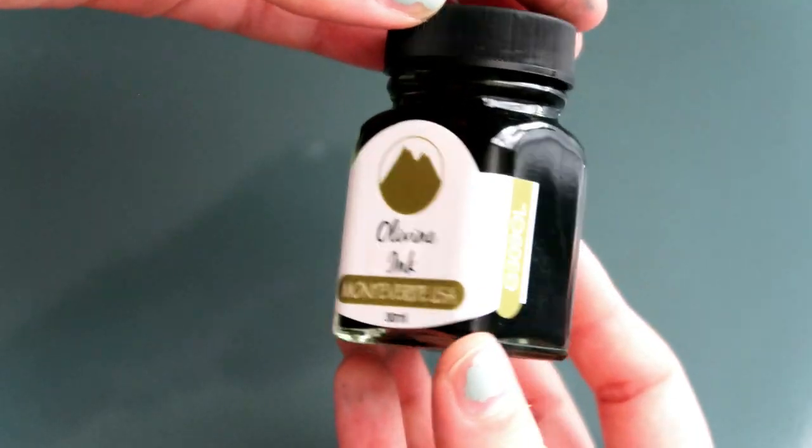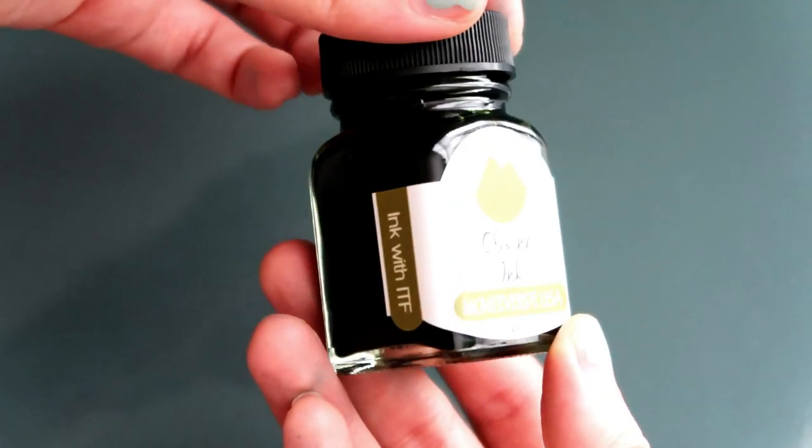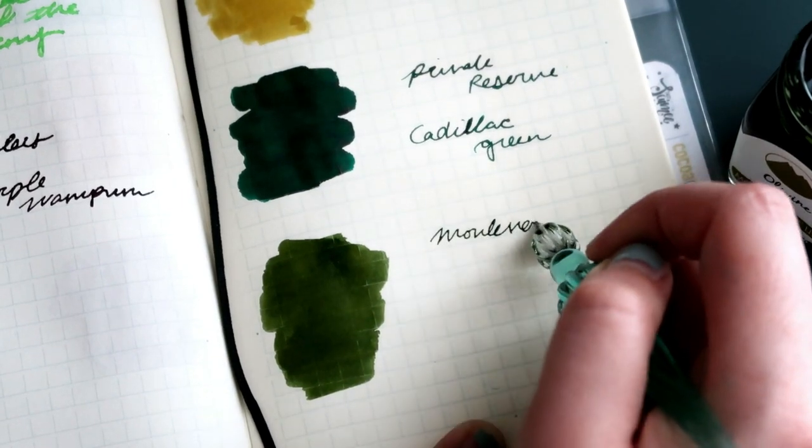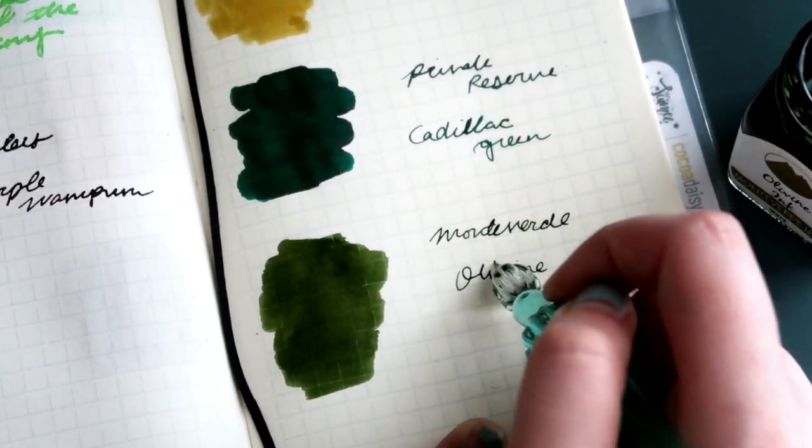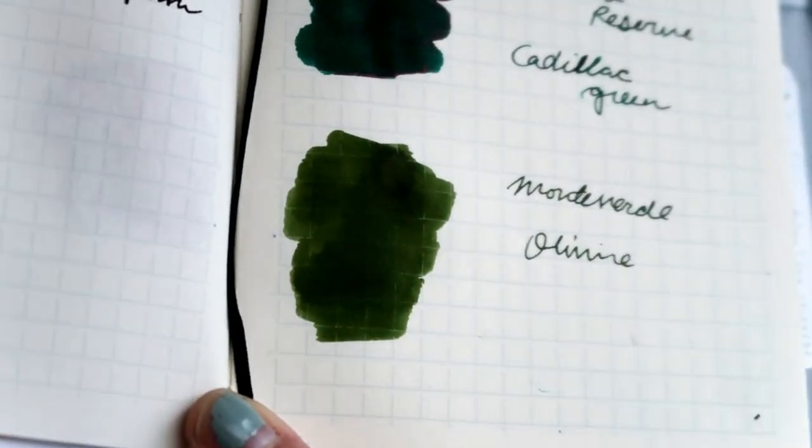Next is the free bottle of ink I received on Fountain Pen Day. This one is Monteverde Olivine. I like the shade, but I did have it in my Eco pen, and it would gunk up the nib and clog it.